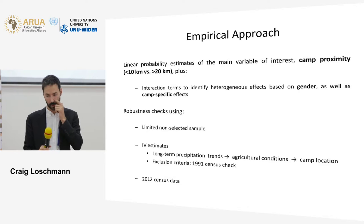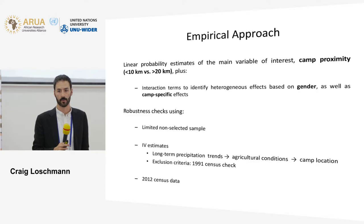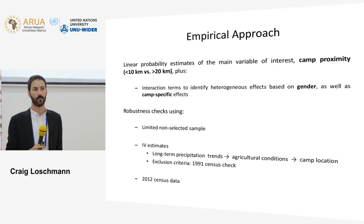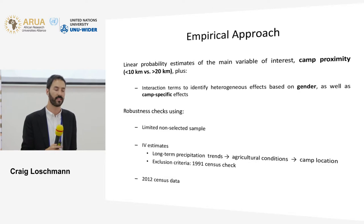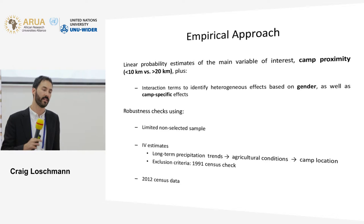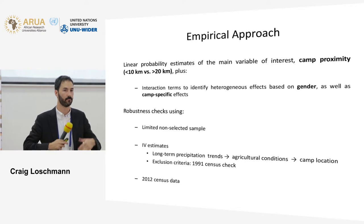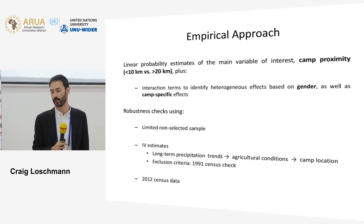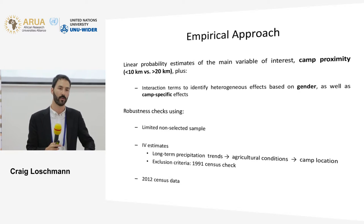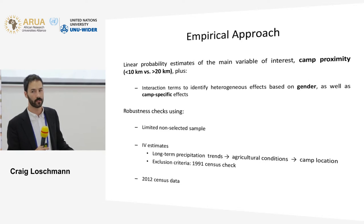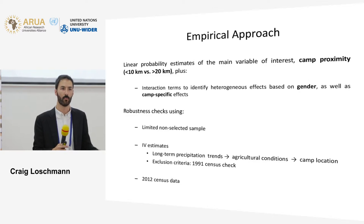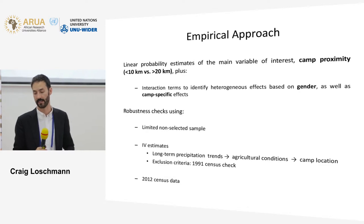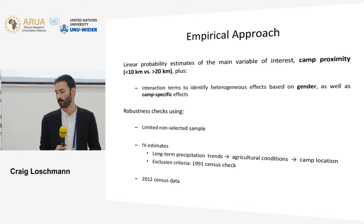Beyond baseline estimates, we include a range of robustness checks to address potential selection bias. One concern is that local Rwandans could have moved into these areas in anticipation of a booming local economy once camps were established. To mitigate this, we limit our sample to only those people who were either born in the surveyed community or moved there prior to the establishment of the nearest camp, thereby mitigating positive self-selection.